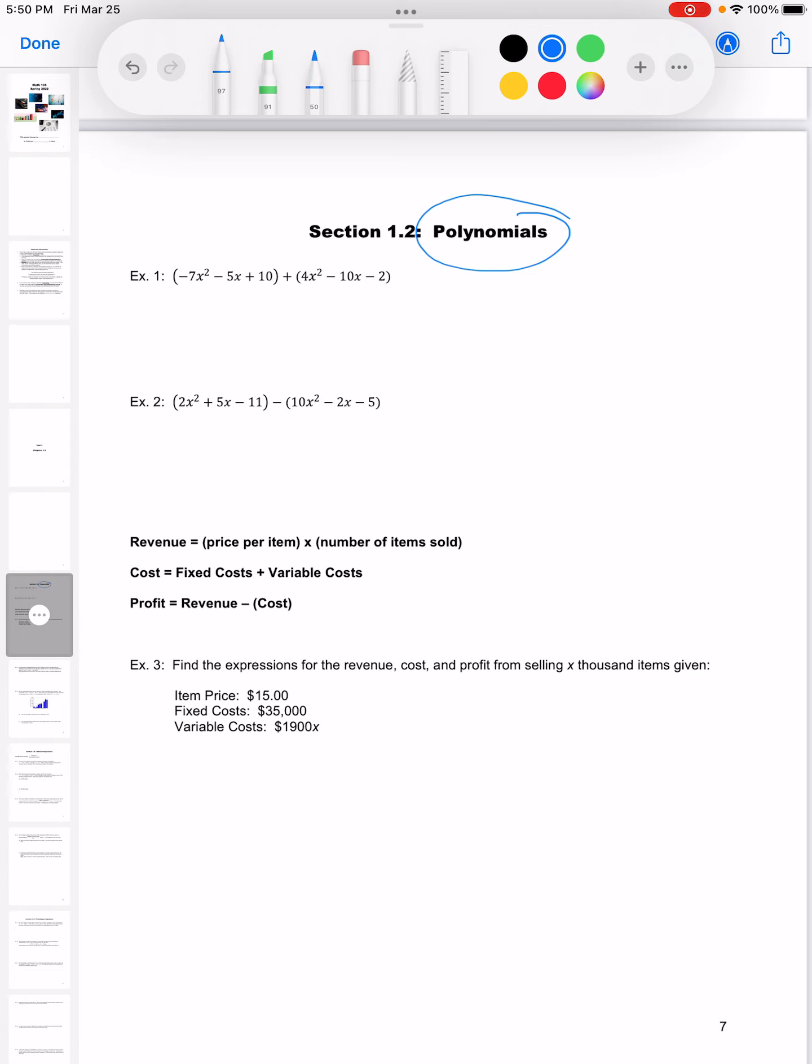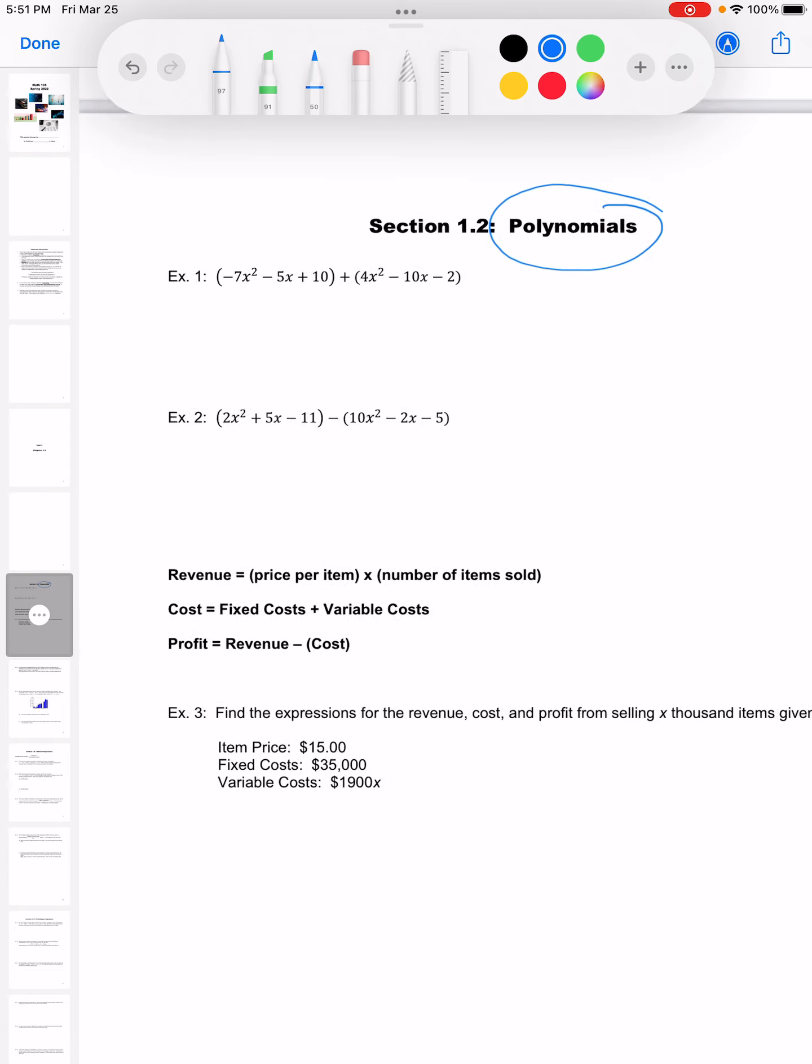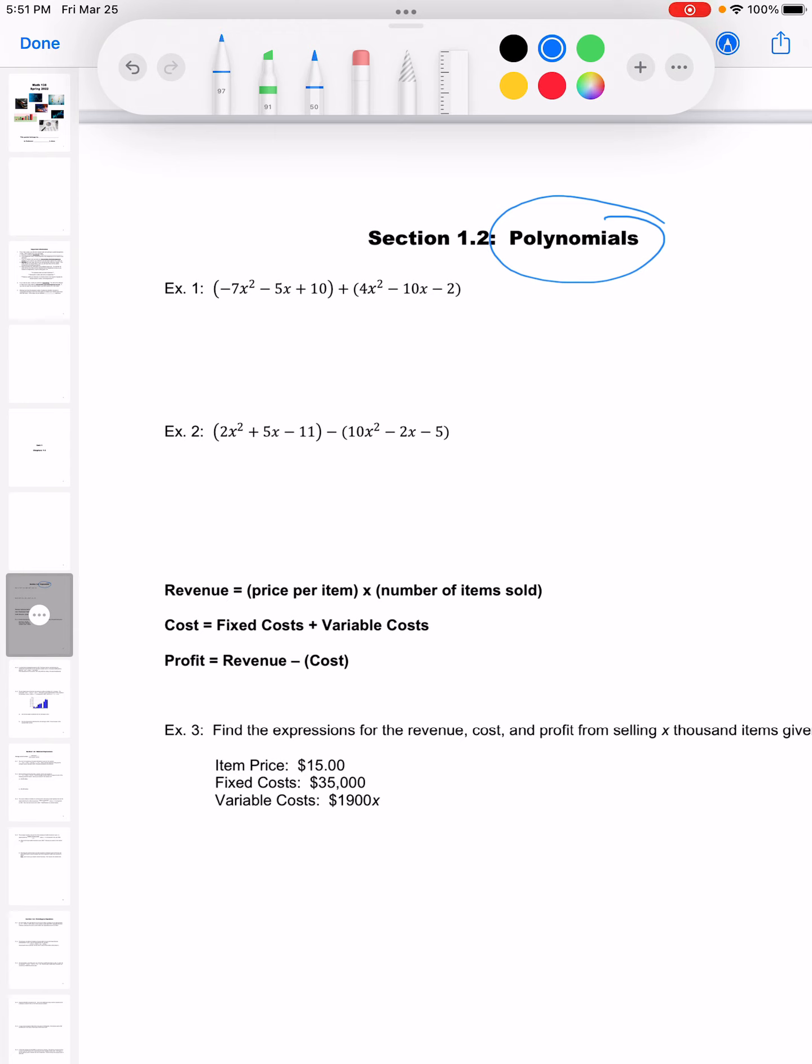So for these first two examples, what we need to do is combine our like terms. So if we look at these, like terms are going to go with the variables.